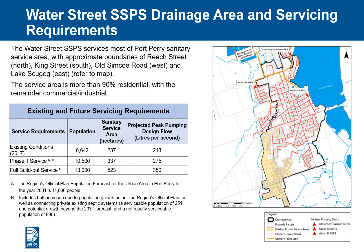The Water Street SSPS services most of the Port Perry Sanitary Service Area, with approximate boundaries of Reed Street to the north, King Street to the south, Old Simcoe Road to the west, and Lake Scugog to the east, as shown in the map. The service area is more than 90% residential, with the remainder being commercial and industrial. Currently the pumping station services a population of 6,642 people, with a sanitary service area of 237 hectares and a projected peak design flow of 213 litres per second.